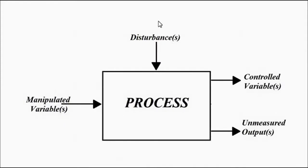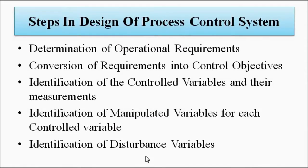The important variables to consider are the manipulated variable, the controlled variable, and the disturbance variables. The basic steps in designing a process control system are: first, the determination of operational requirements — what you want the control system to do, quantified in terms of which parameter to control and the desired range of values. These operational requirements are then converted into control objectives, and that is where the set point or reference value comes into play.